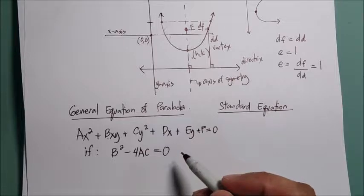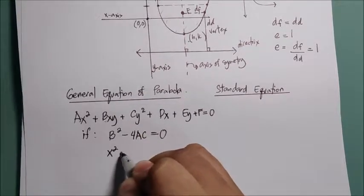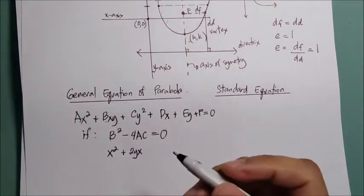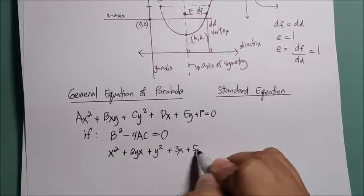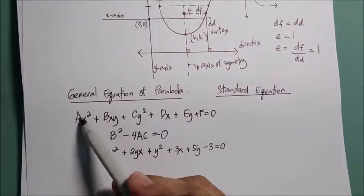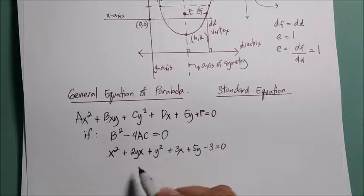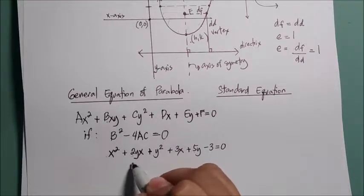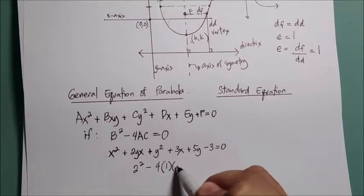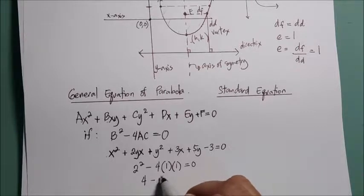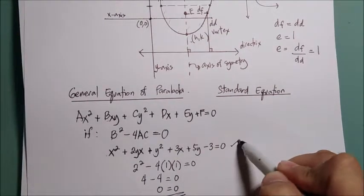For example, take the equation x² + 2xy + y² + 3x + 5y − 3 = 0. Here a = 1, b = 2, c = 1, d = 3, e = 5, f = −3. To confirm it is a parabola: b² − 4ac = 2² − 4(1)(1) = 4 − 4 = 0. Since the result equals zero, this equation is a parabola.